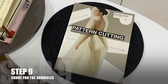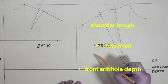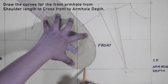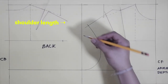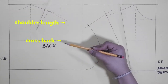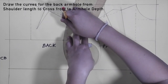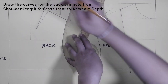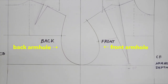Step nine: curve for the armholes. Connect the shoulder length mark to the cross front mark to the underarm point for the front armhole. For the back, it is the same procedure as the front armhole. Now that I have completed the armholes, I'll be moving on to the next step which is the front waist dart.